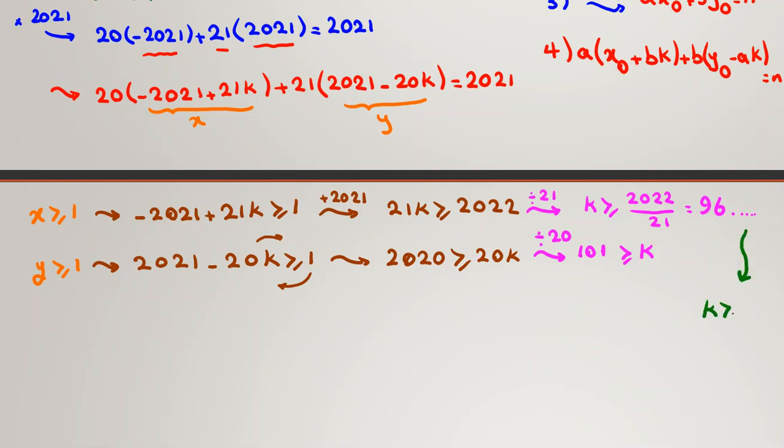Because K is integer, so K will be at least 97. So, if we combine these two things, K is at least 97 and at most 101. So, K can be 97, 98, 99, 100, and 101. 1, 2, 3, 4, 5 answers. So, the problem says, how many answers do we have? The answer will be 5, and the correct choice will be B.